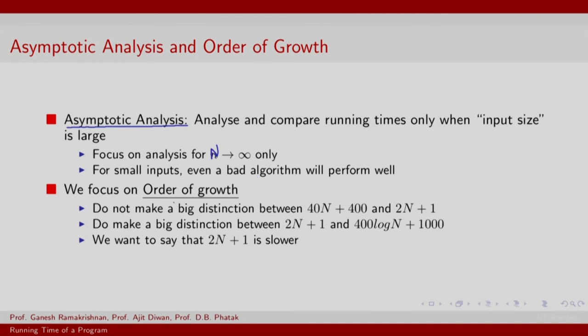The other thing is we also want to get out of unnecessary details, and we do that by focusing on order of growth. Now, what does this mean? Well, this means that we do not want to make any serious distinction between 40N plus 400 and 2N plus 1.